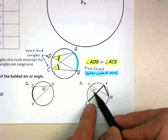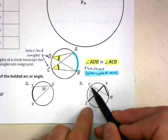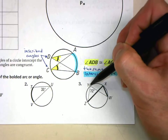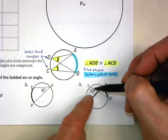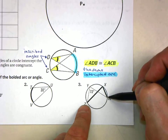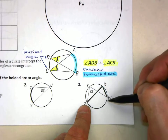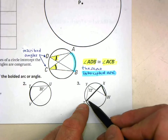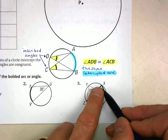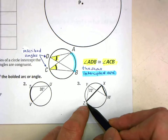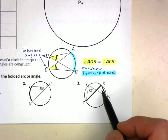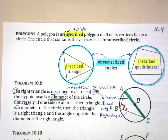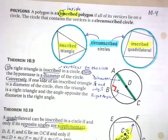Here they're telling us that the measure of angle y is 72 degrees. That's an inscribed angle, because the vertex is on the circle, and it creates an intercepted arc. Notice that the other angle they want us to find is also an inscribed angle with the same intercepted arc. So I'll let you figure out what the measure of that angle is on the back side of those notes.